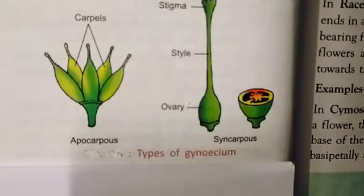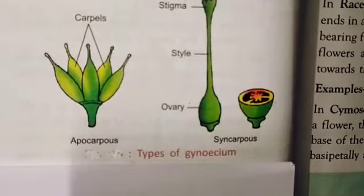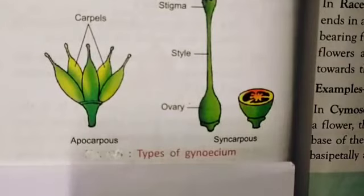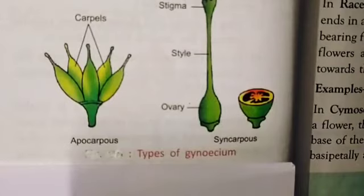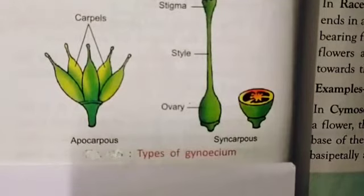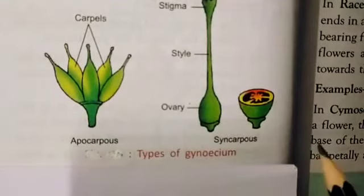In this video, we study the types of gynoecium. Gynoecium can be of two types depending on whether the carpels are free or not. Based on this, we divide the gynoecium into two types: apocarpous and syncarpous.